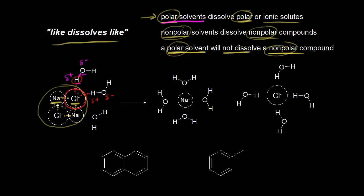We can pull off these chloride anions from the solid and bring the anion into solution. On the right, we have our chloride anion in solution surrounded by a bunch of water molecules, with all these partially positive hydrogens interacting with our negatively charged chloride anion. For the sodium cations, since the sodium cation is positively charged, that's going to interact with the partially negatively charged oxygen in the water molecule. If you get enough water molecules, you can pull off these sodium cations and bring them into solution, with the partially negative oxygens on water interacting with the positively charged sodium cations.